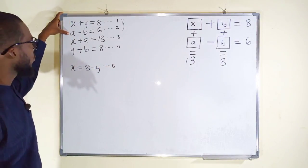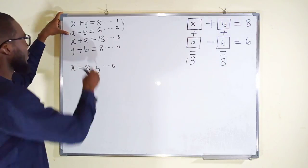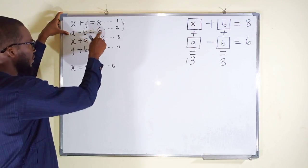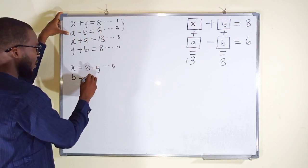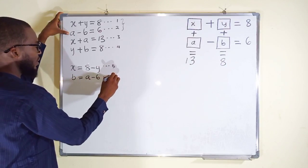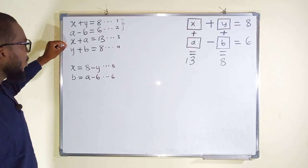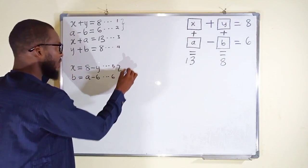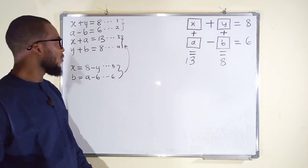Then from equation 2 we can make b the subject. b will now be equal to a minus 6. Let me call this equation 6. We are going to substitute these two equations back into equation 3 and equation 4.